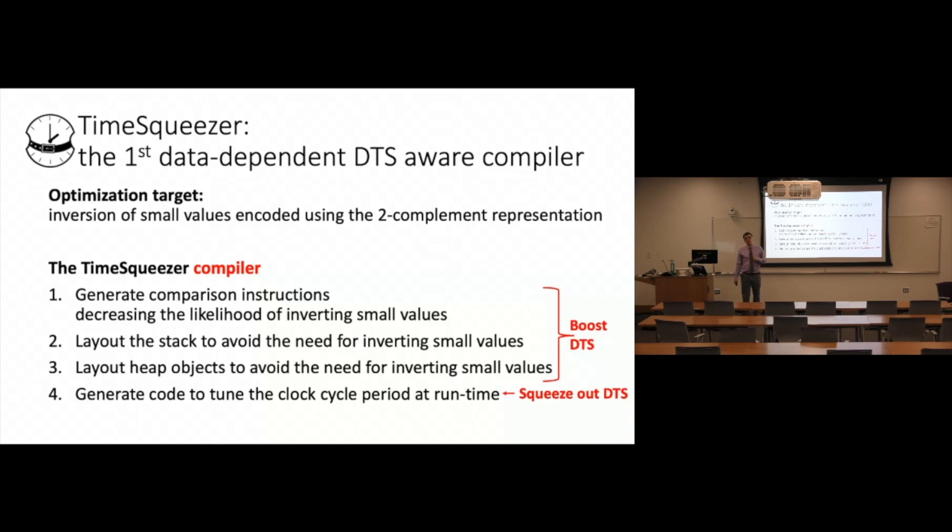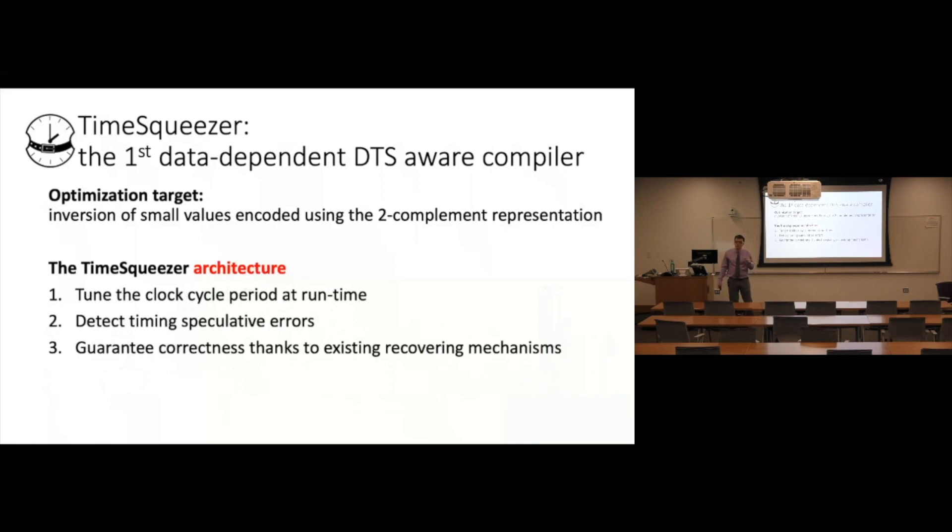the final step of our compiler is to generate code to change the clock cycle at runtime to squeeze out the timing slack and translate it into energy savings. On top of changing the clock cycle at runtime, our architecture detects and fixes timing speculation errors that happen every time the compiler was too aggressive at shrinking the clock period.